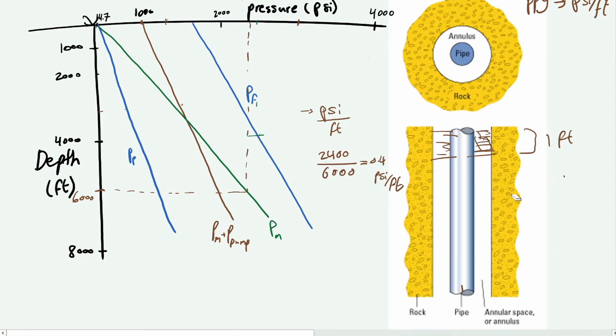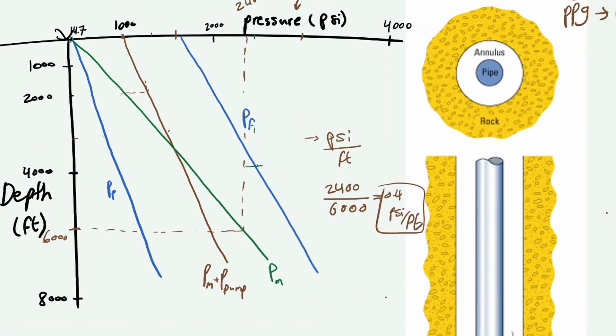So each foot of mud you will get 0.4 psi of pressure. If we have 1000 feet of mud, if you have the mud gradient you have to get rid of this feet. So it's 0.4 psi per foot multiplied by 1000 feet, and you will get about 400 psi.